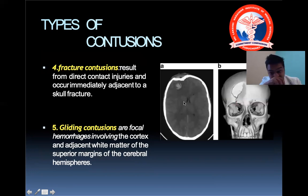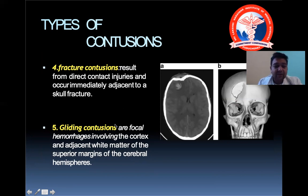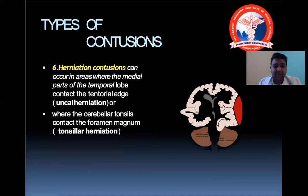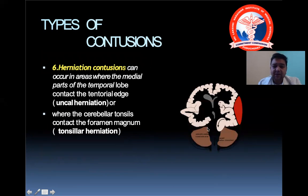There are also fracture contusions associated with skull fractures — for example, a right frontal fracture with an associated contusion. There can be gliding contusions, which are focal hemorrhages involving the cortex and adjacent white matter of the superior margin. There are also herniation contusions associated with the herniation types discussed earlier.